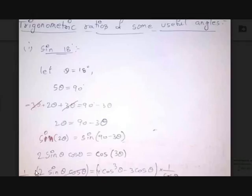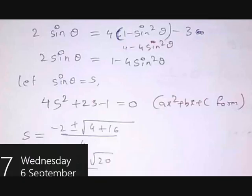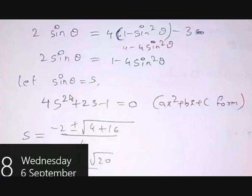Multiply both sides by 1/cos theta. Cos theta cancels on the LHS, giving 2 sine theta = 4 cos² theta - 3. Substitute cos² theta = 1 - sin² theta: 4(1 - sin² theta) - 3 = 1 - 4 sin² theta. So 2 sine theta = 1 - 4 sin² theta. Let sin theta = S, which gives the quadratic equation 4S² + 2S - 1 = 0.